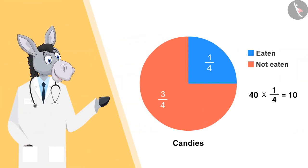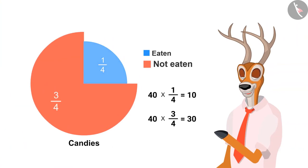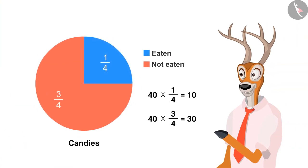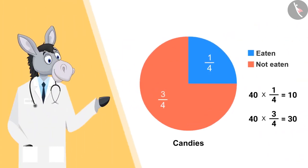So, how many candies are left? Three-fourth, that is thirty candies. Very good.